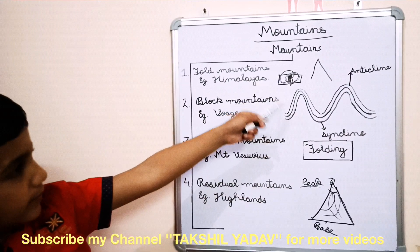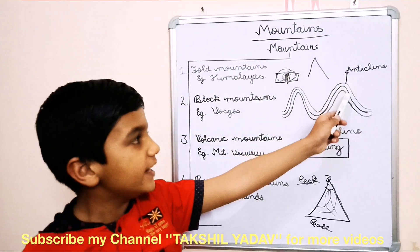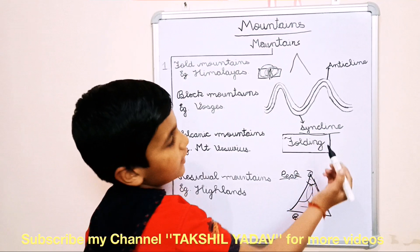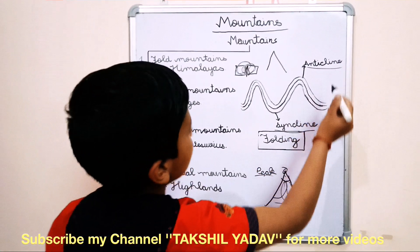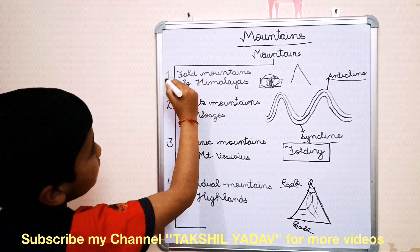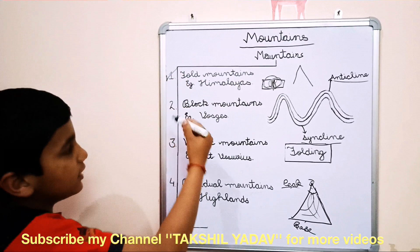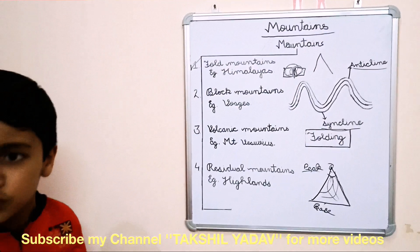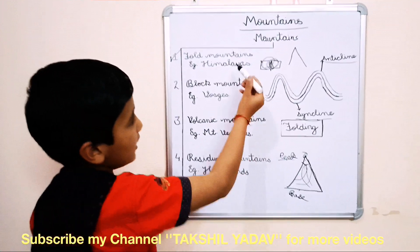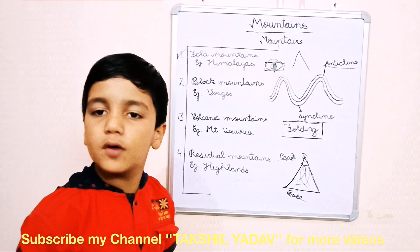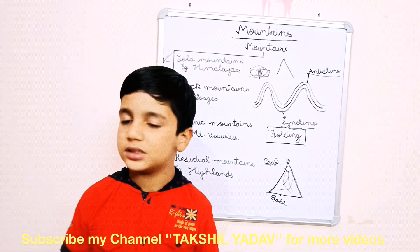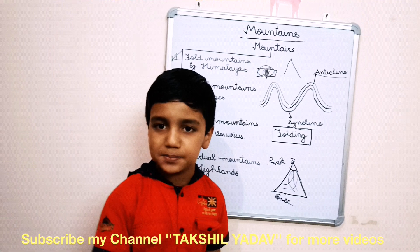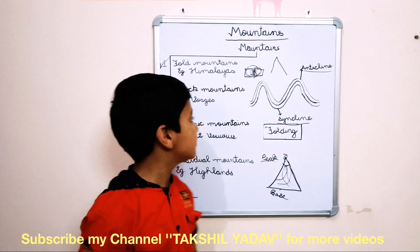Fold mountains have mainly two parts: the anticline and the syncline. The lower part is known as the syncline and the upper part is known as the anticline. Examples of fold mountains include the Indian Himalayas, the Alps, and the Andes.